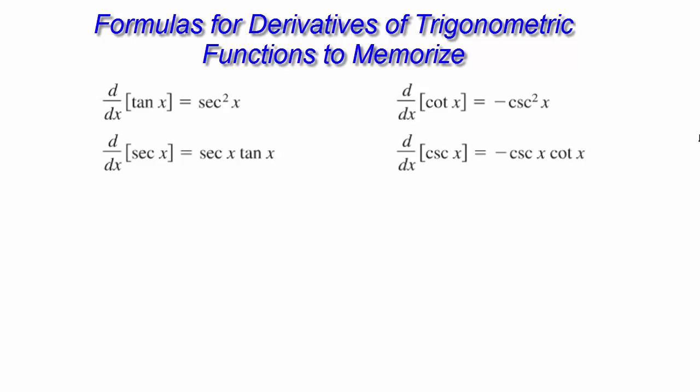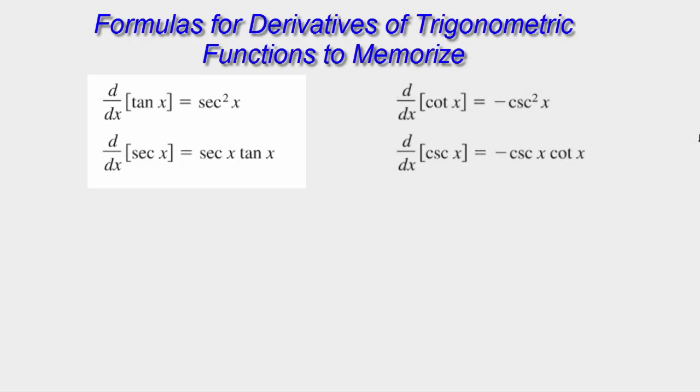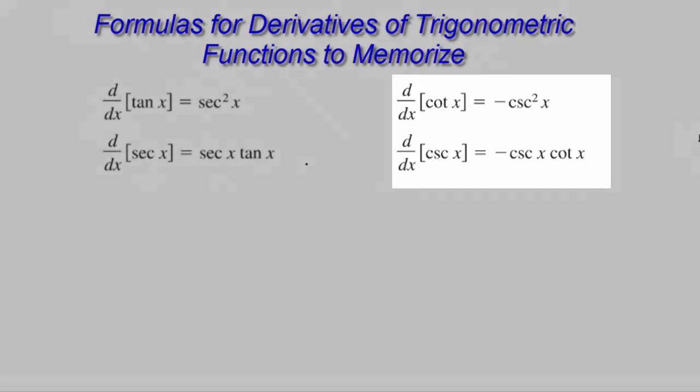The way that we write them is one of the easier ways to memorize them. You'll notice that the tangent and secant derivatives are related, right? And the cotangents and cosecants are related. So this is how we came to use these forms of the derivative.